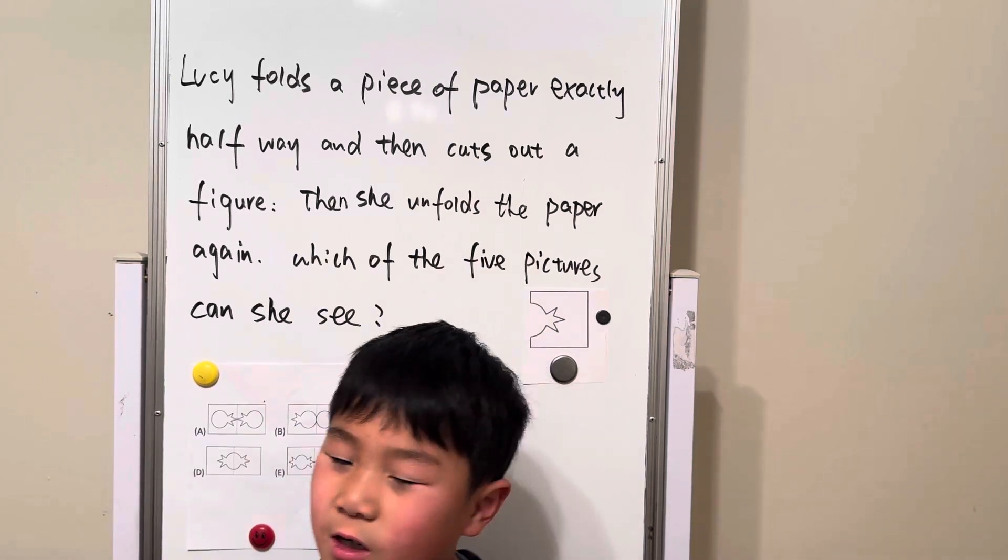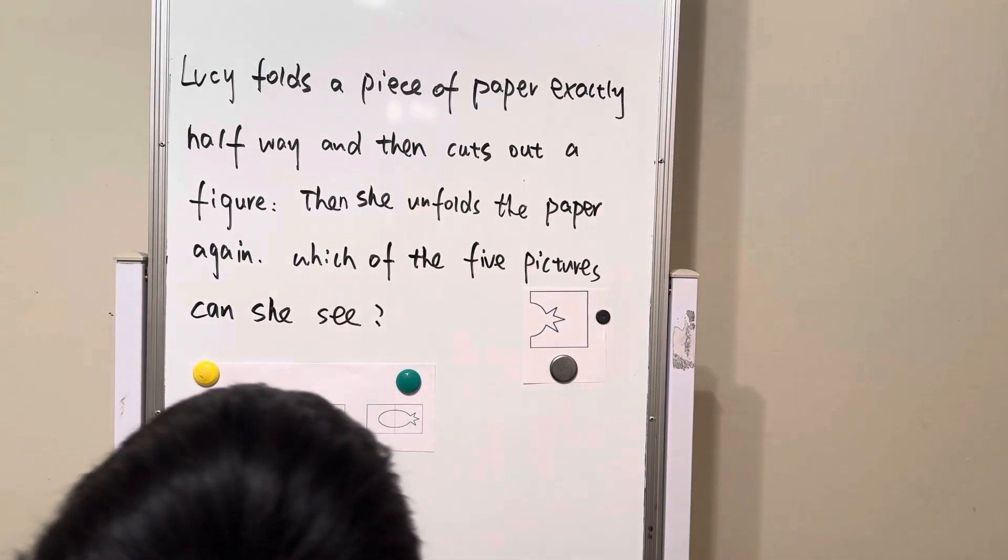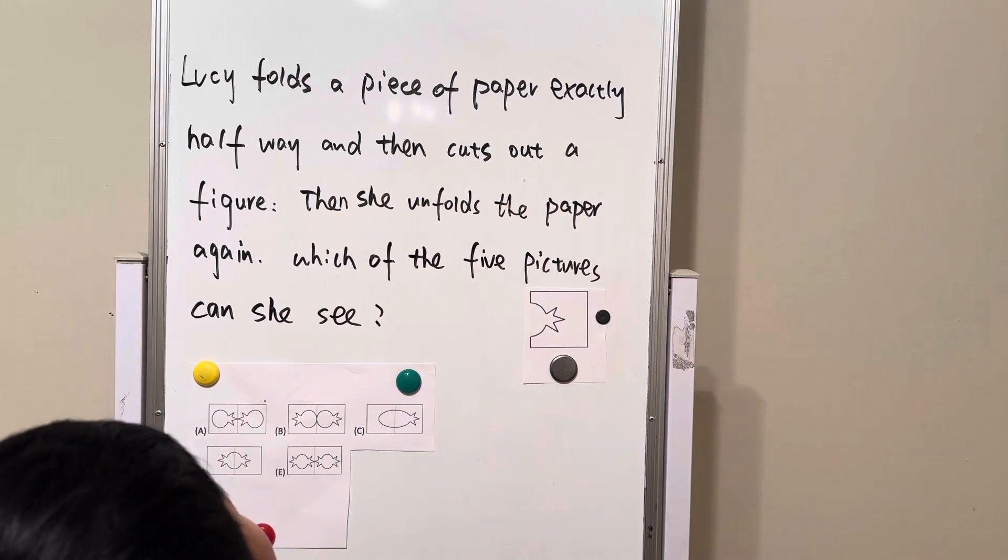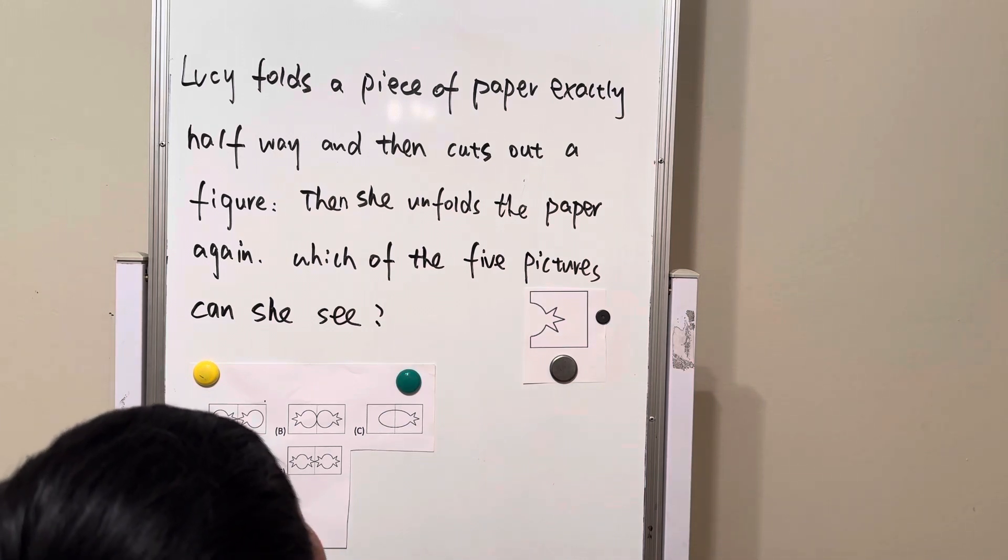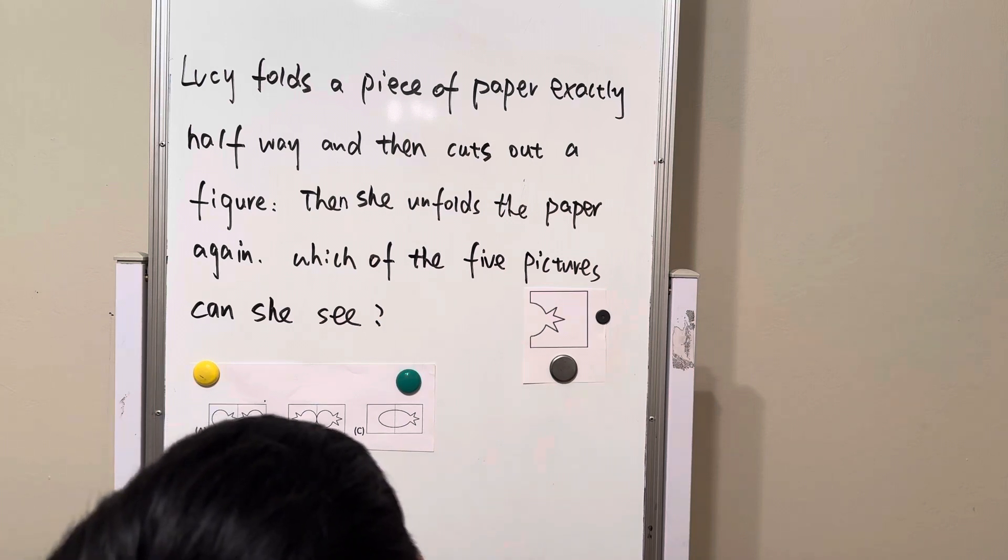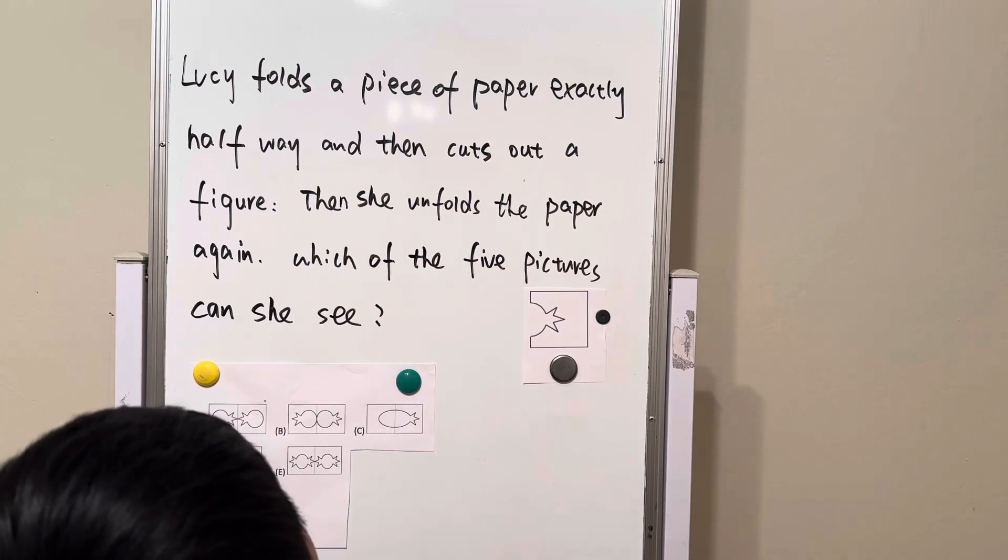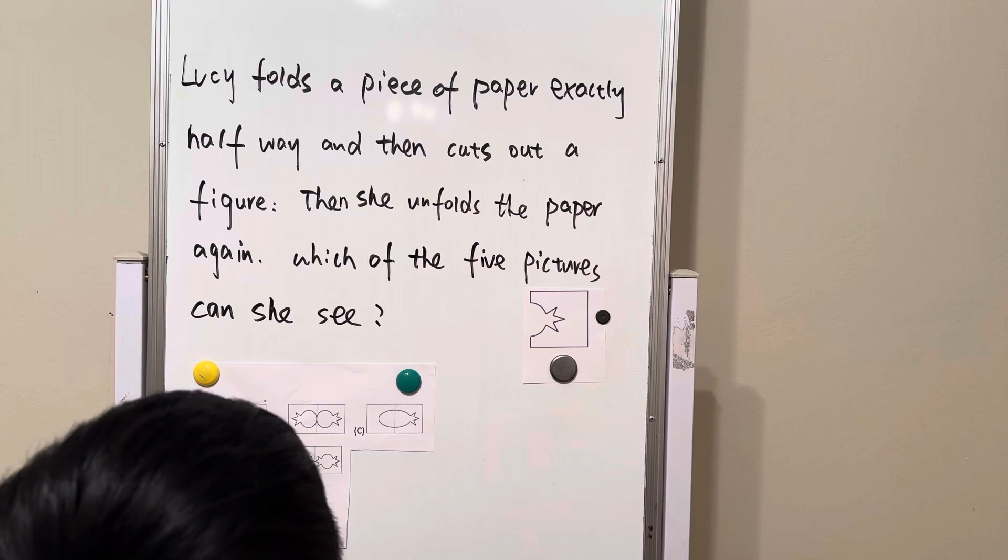Hi everybody. Today we're going to look at this question. Lucy folds a piece of paper exactly halfway and then cuts out a figure. Then she unfolds the paper again. Which of the five figure pictures can she see?